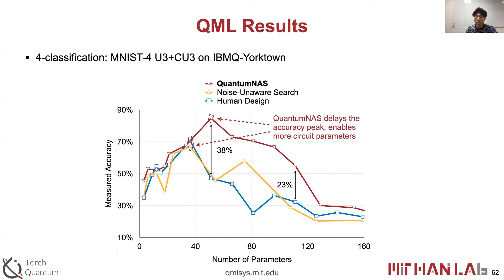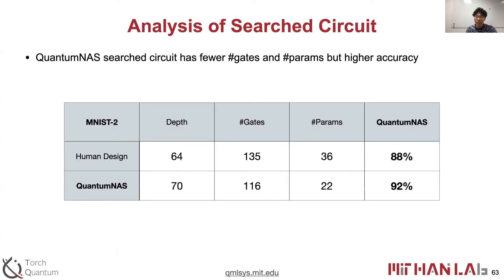We can see that QuantumNAS delaying the accuracy peak enables more circuit parameters. Therefore, under the same number of parameters, QuantumNAS can bring up to 38% accuracy boost. We also show the detailed circuit properties for the MNIST-2 task. We can see again that more parameters and gates do not necessarily bring better accuracy — the QuantumNAS-searched circuit has fewer parameters but higher accuracy.